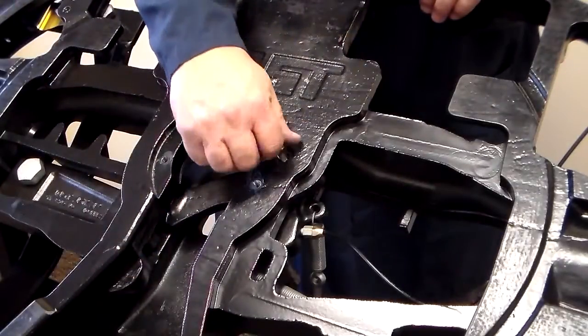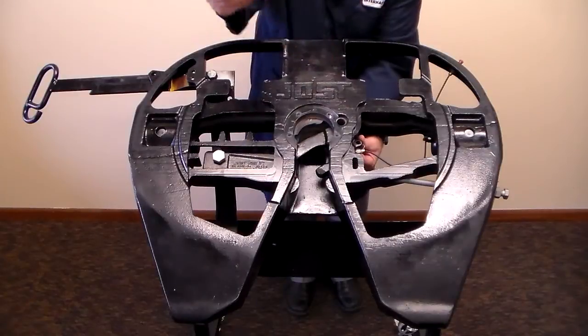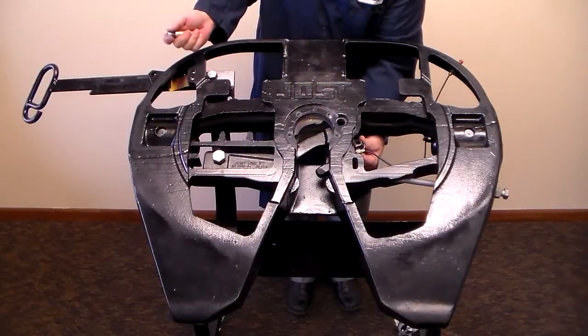Now remove the lockjaw pivot pin. Thread one of the cushion ring bolts into the lockjaw pivot pin and lift the pin from the casting.